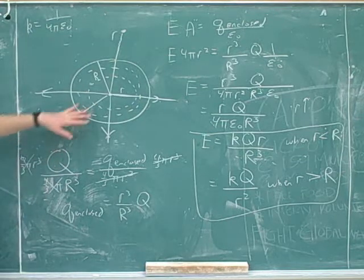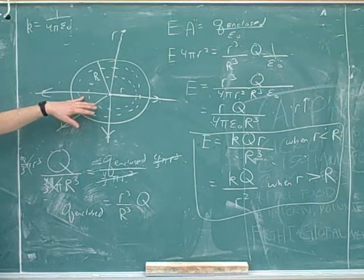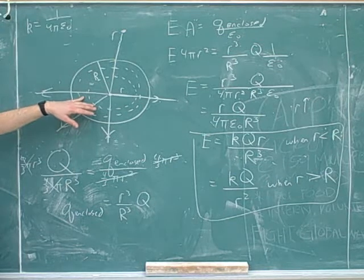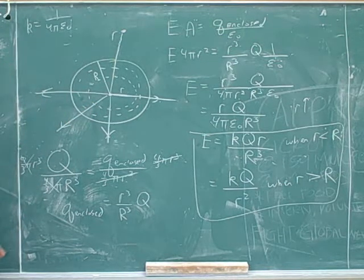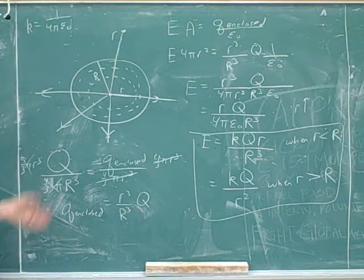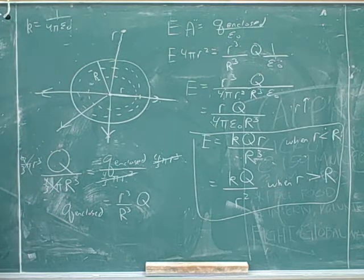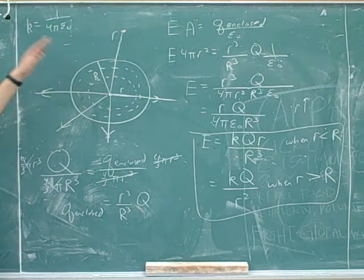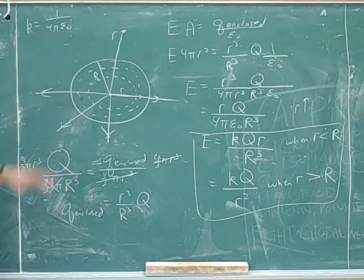Notice that for this whole problem, we were treating this as a source charge because we were trying to figure out the electric field from the source charge. So we're using the left hand of the flow chart in your handout. We haven't even, for this problem, we didn't even use the right hand part of the flow chart. We're not even thinking about any test charges that might feel a force from this. The problem was hard enough just to find the electric field.